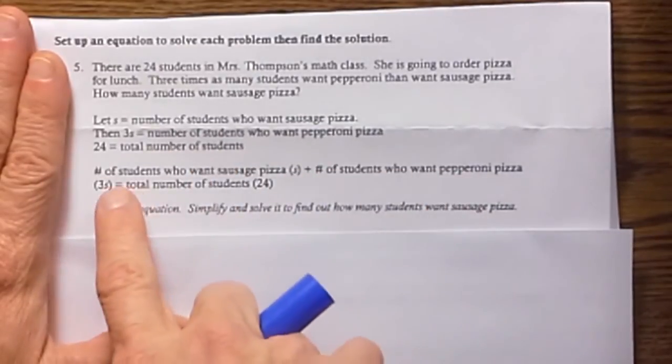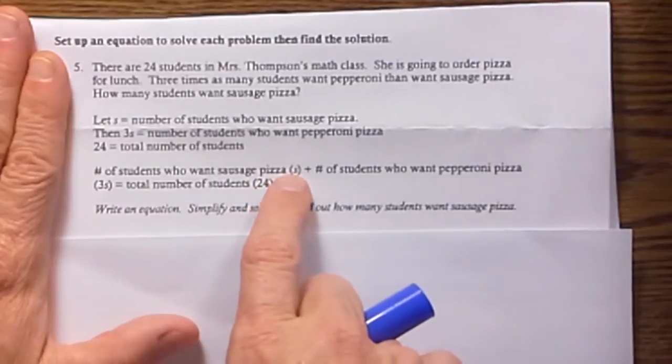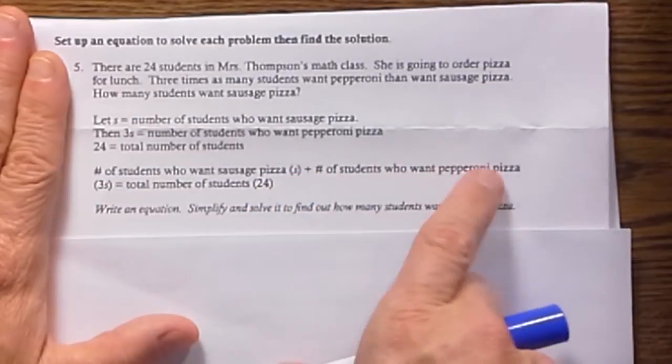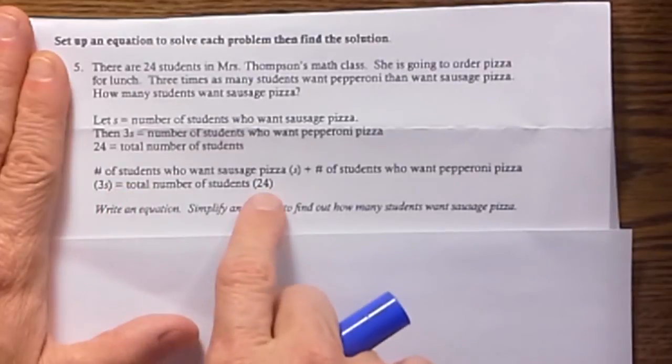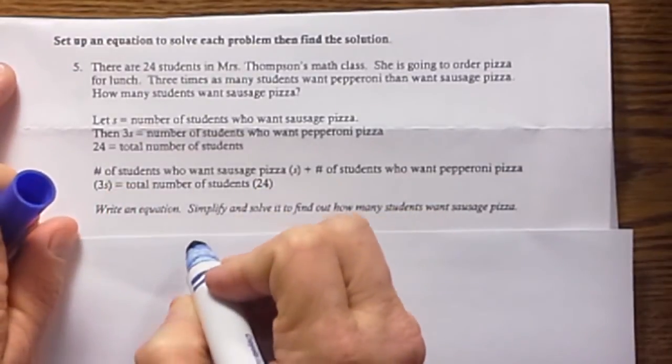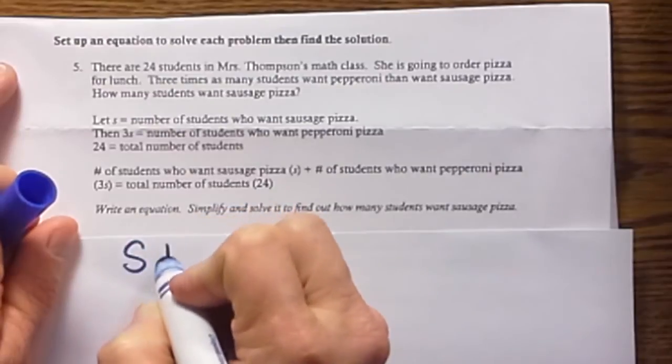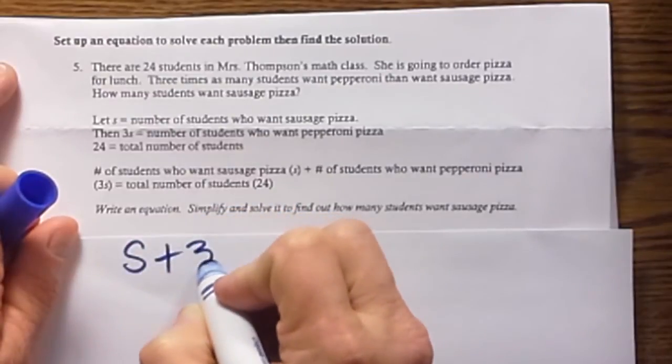That is kind of helping us set it up. We have the number of students who want sausage, which is S, plus the number of students who want pepperoni, which is 3S, is equal to 24. So let's set up that equation. So we have S plus 3S is equal to 24.